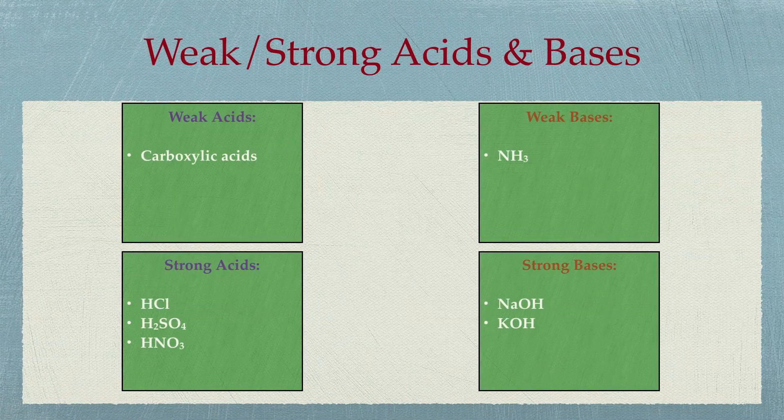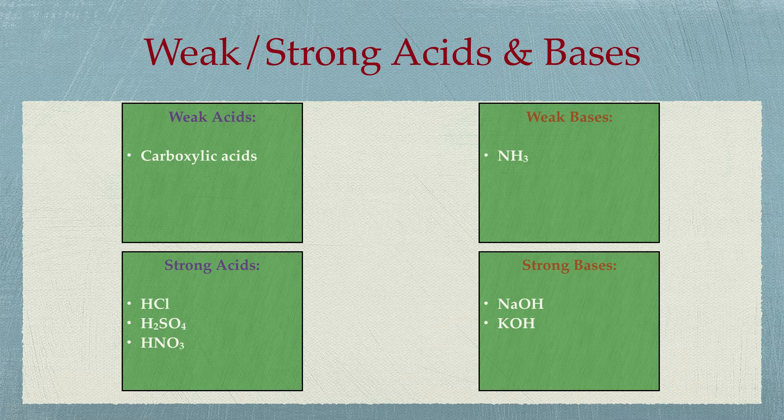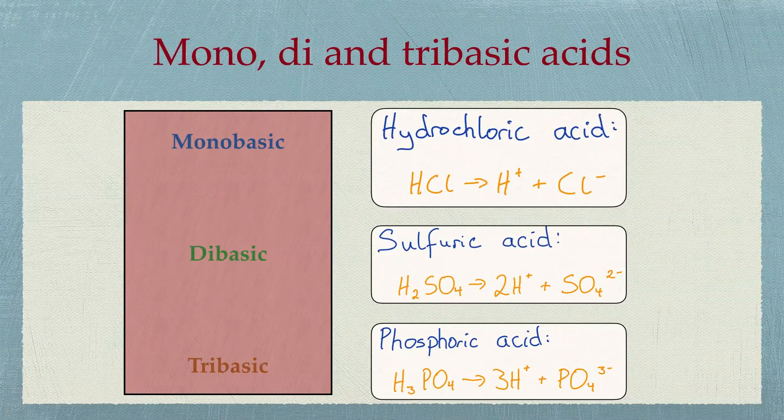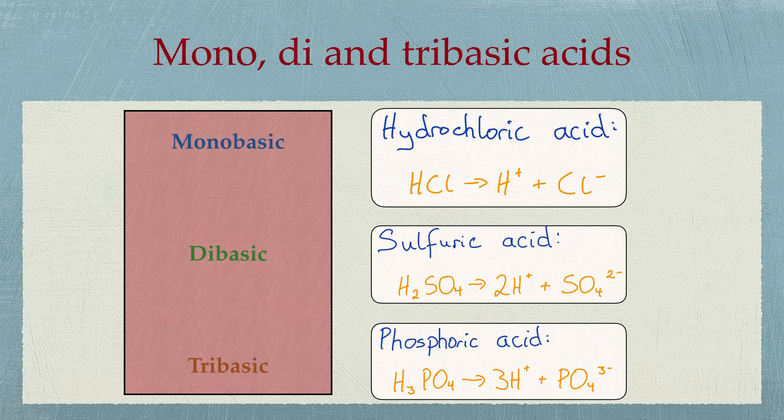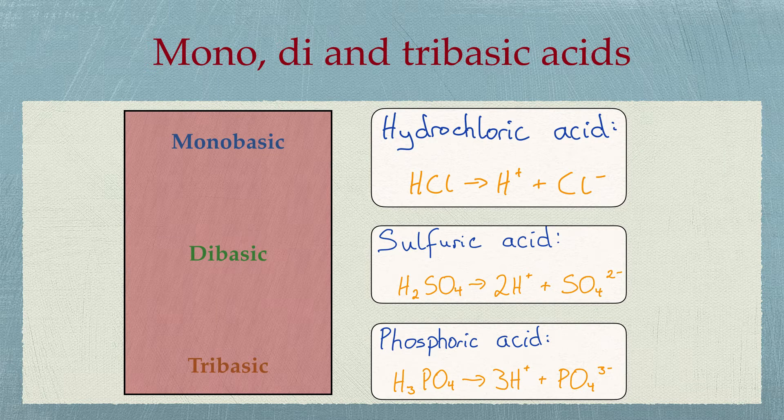There are some acids and bases that need to be learnt off so that you know if they are strong or weak. It would be important for later calculations that you can identify acids that produce one or more hydrogens. Mono means 1, di meaning 2 and tri meaning 3. For now, you simply need to be identifying acids that can produce multiple hydrogen ions.